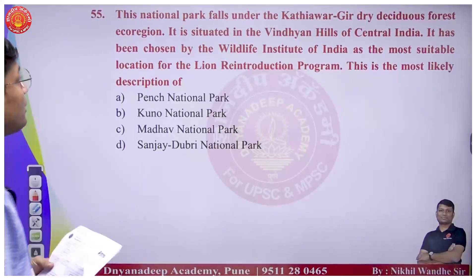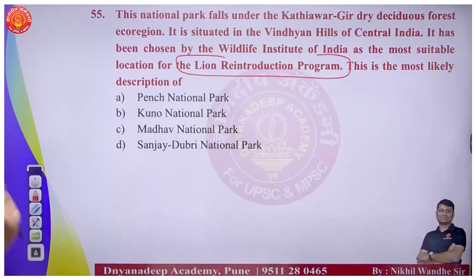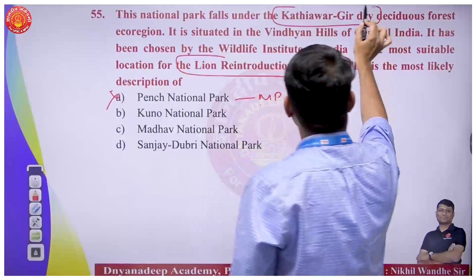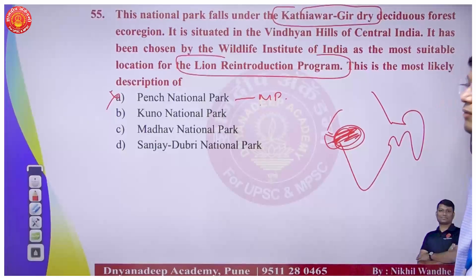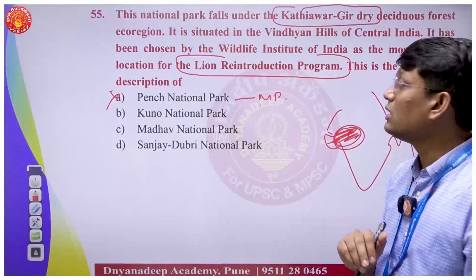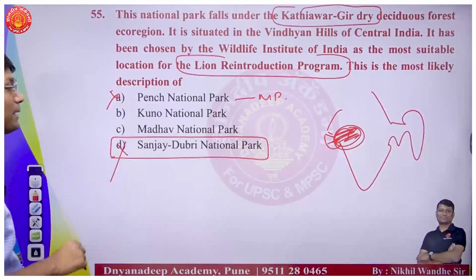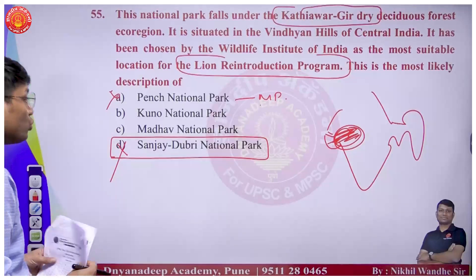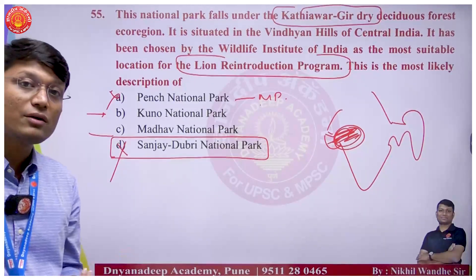Question on Kathiawar-Gir dry deciduous forest eco-region for cheetah reintroduction: this region covers Gujarat and western Madhya Pradesh. Sanjay Dhubri National Park is in the eastern part of Madhya Pradesh on the border with another state. Kuno National Park is in the Kathiawar-Gir eco-region in that particular region of Madhya Pradesh. If you have current affairs knowledge about cheetah reintroduction to Kuno, you might get confused with these national parks.